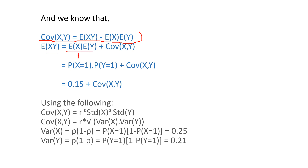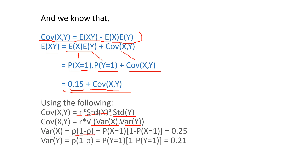Substituting: E[X] = P(X=1) = 0.5 and E[Y] = P(Y=1) = 0.3, so E[X]·E[Y] = 0.15. Thus E[XY] = 0.15 + Cov(X,Y). The covariance can be written as Corr(X,Y) times the standard deviation of X times the standard deviation of Y. The variance of a Bernoulli variable is P(1-P), giving Var(X) = 0.25 and Var(Y) = 0.21.